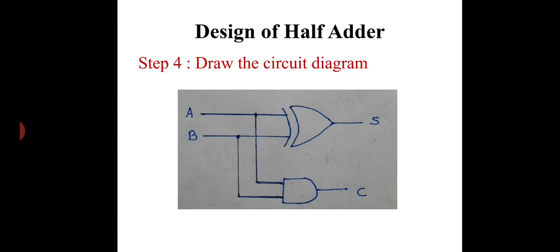Moving further, now our intention is to draw the circuit diagram which is our last step, that is step number 4. For drawing this, I have two inputs A and B and two outputs sum and carry. So, for the generation of sum, our design equation is A XOR B. We can draw the XOR gate and apply the inputs to it to generate sum. Similarly, we will draw the AND gate and apply the inputs to get the carry as shown in this particular slide.